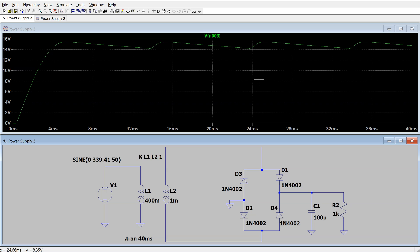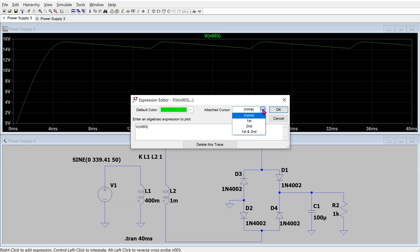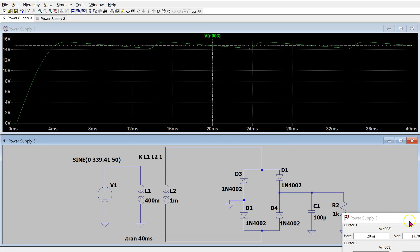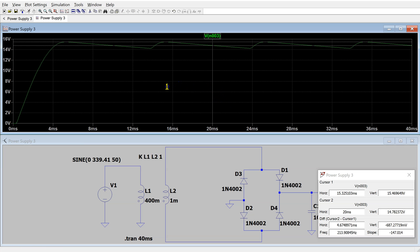We can measure the ripple voltage and frequency by right-clicking on this label and then associating first and second cursor with this waveform. This brings up the cursor window. We can position cursor 1 at the peak and we can position cursor 2 at the trough and this shows that the peak-to-peak ripple voltage is approximately about 1.15 volts.